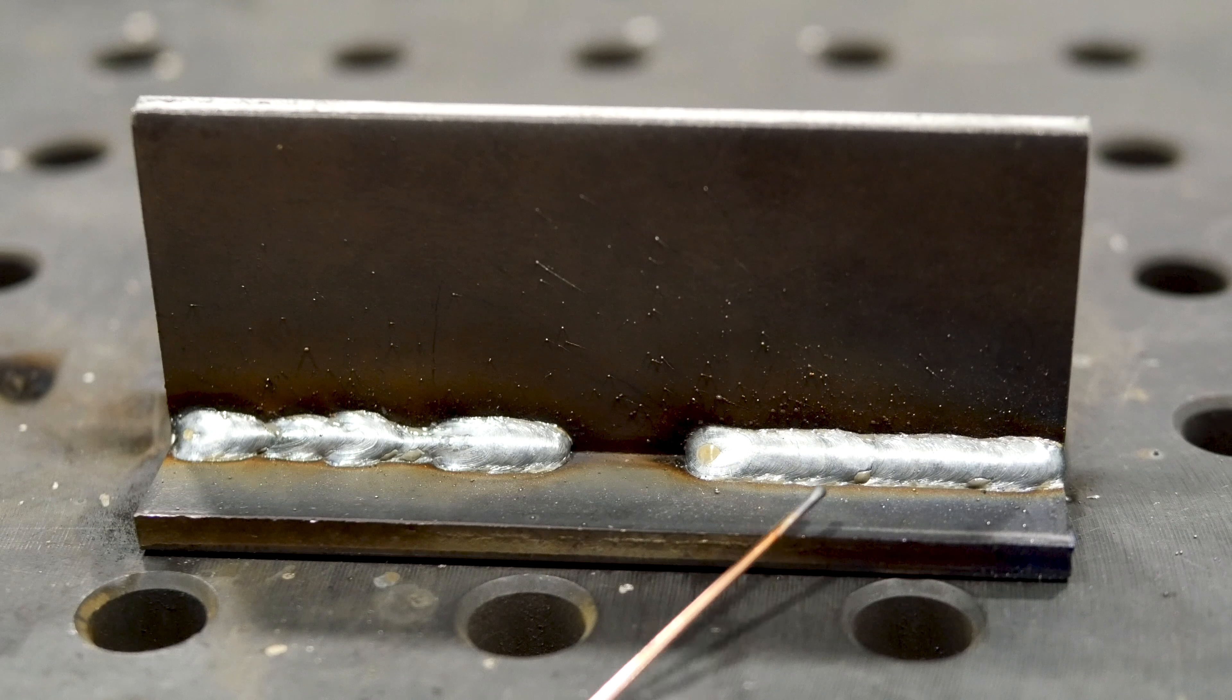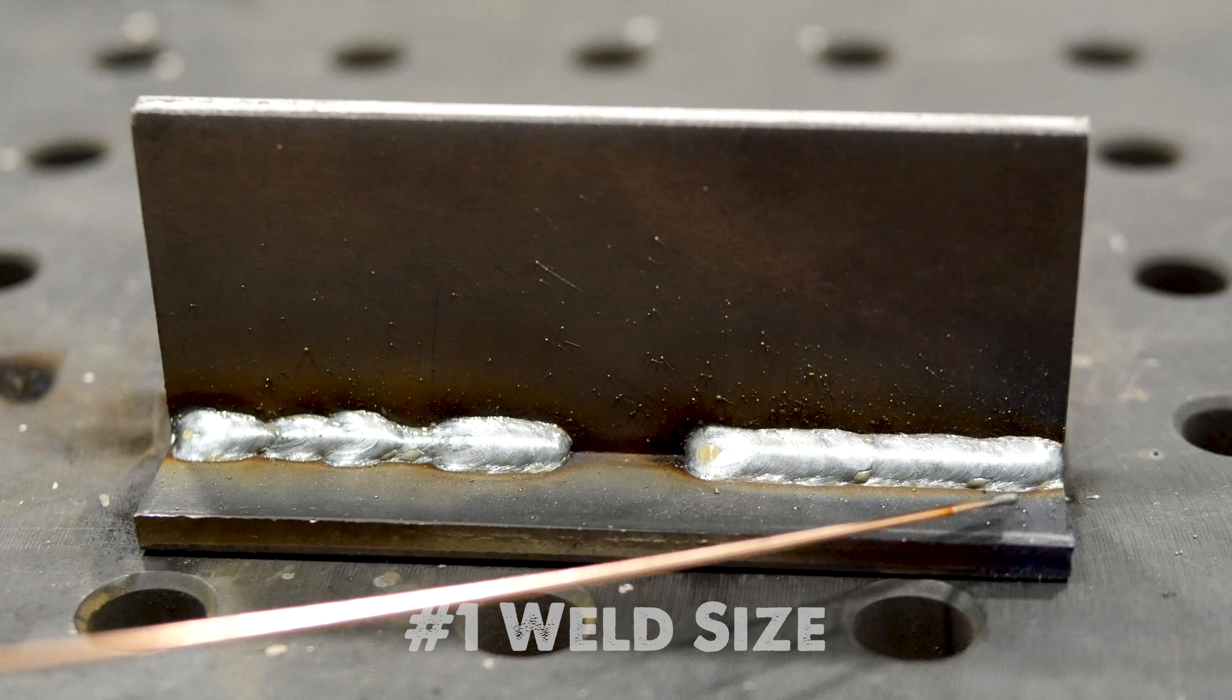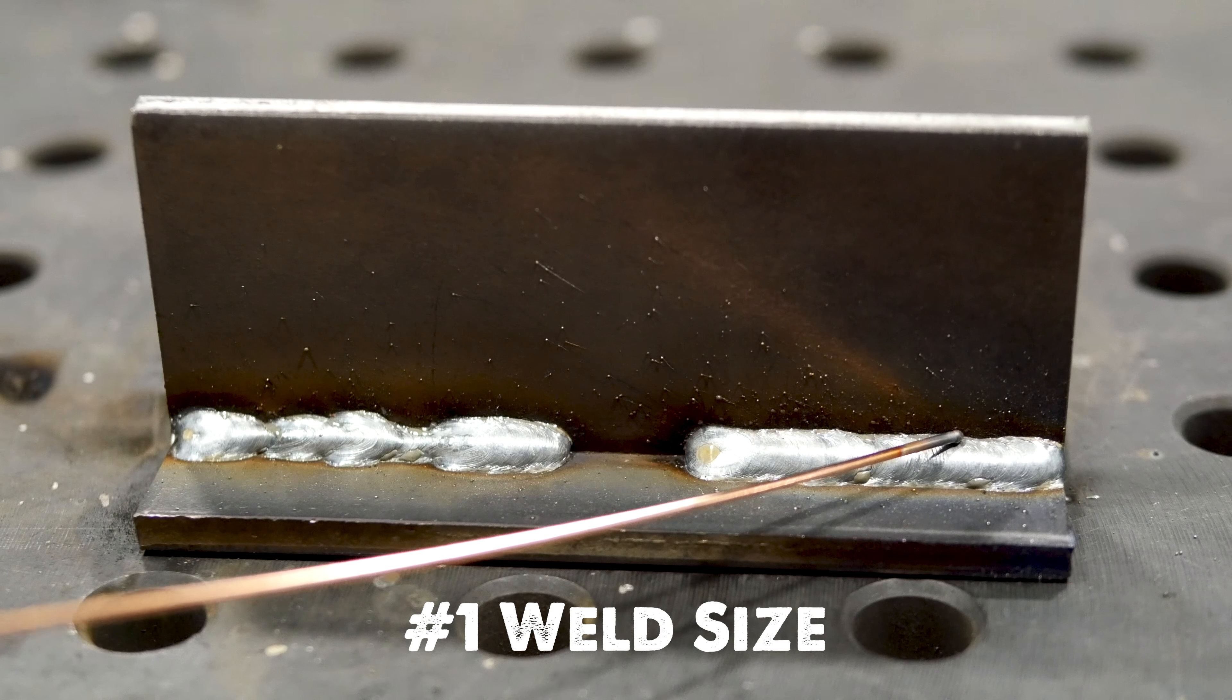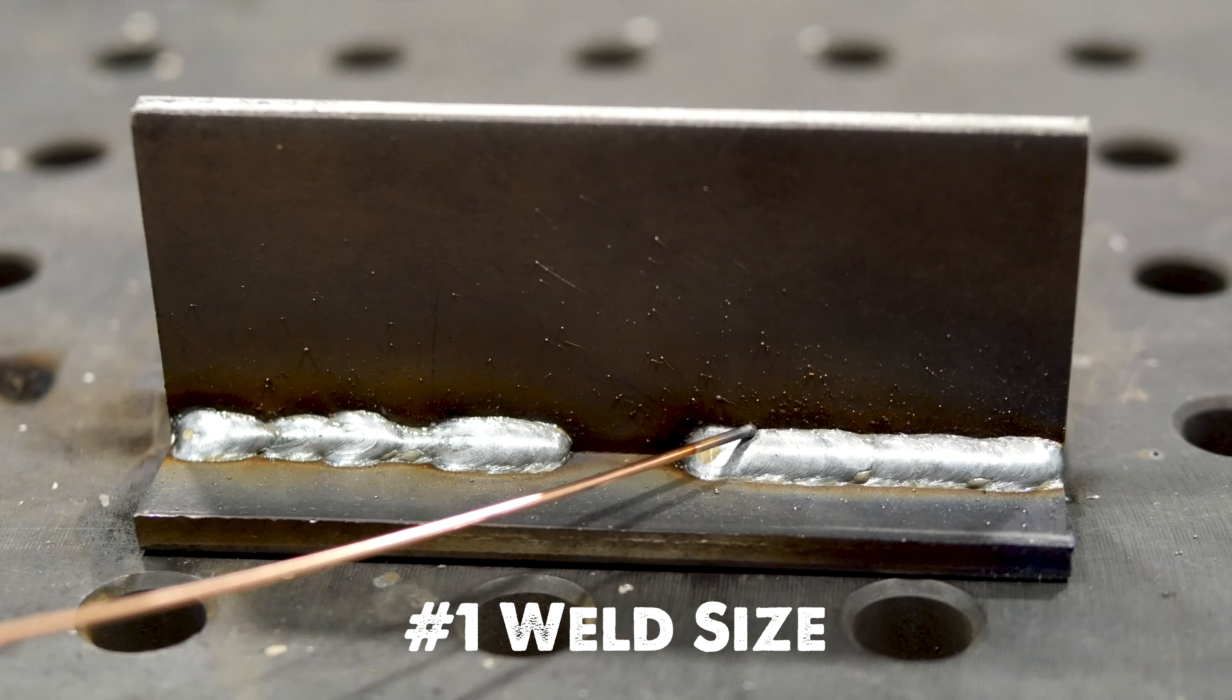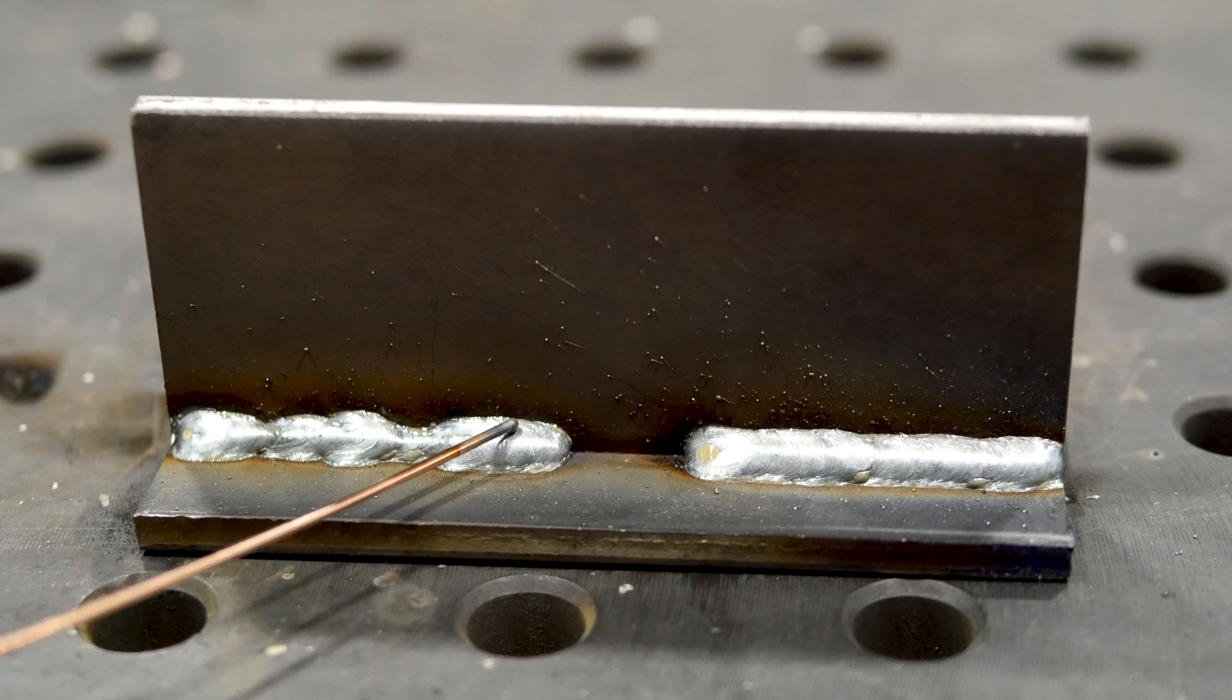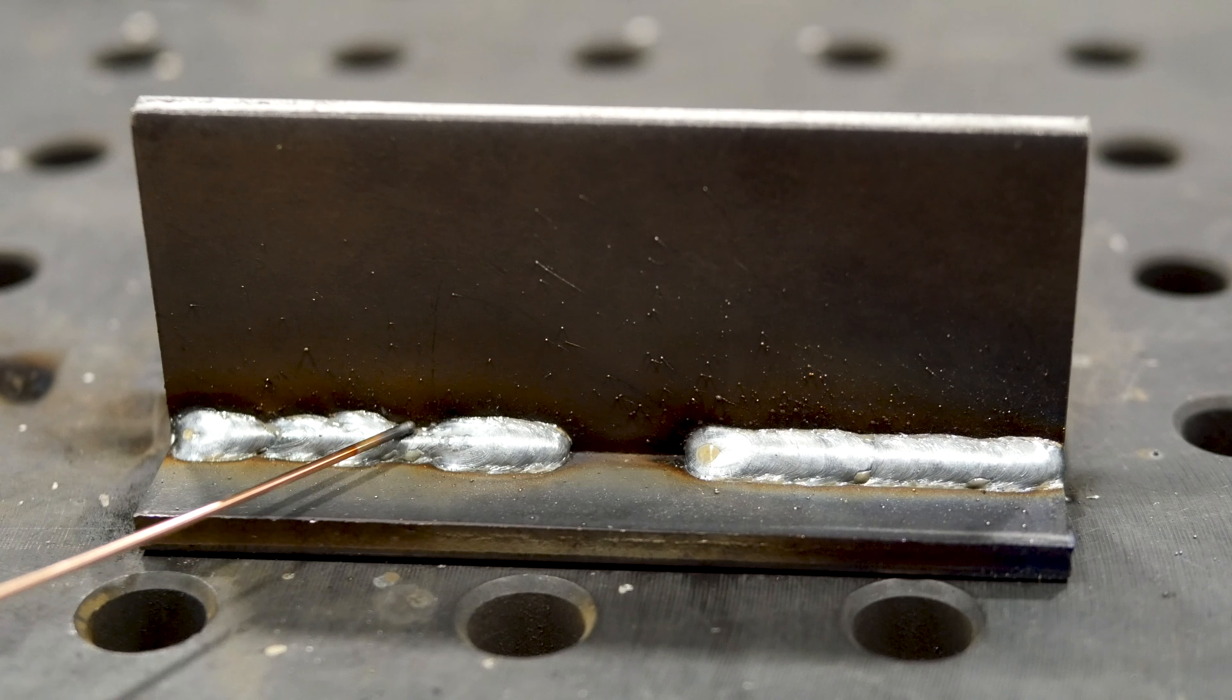The first way to tell if your weld is good is by the size. The weld on the right is a consistent size from point A to point B. The weld on the left has some parts where it necks down.